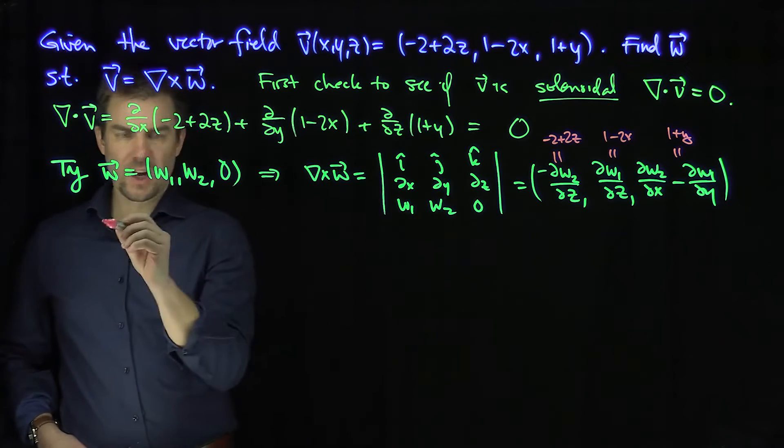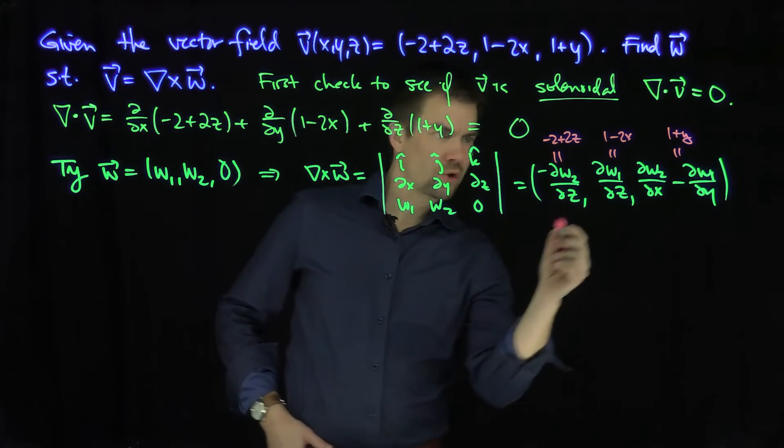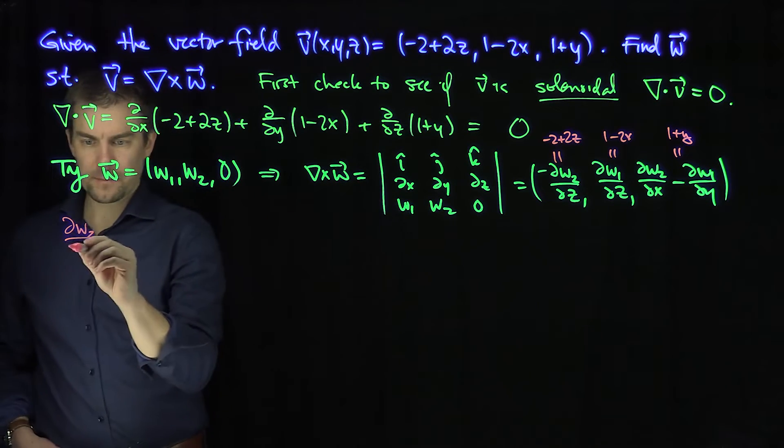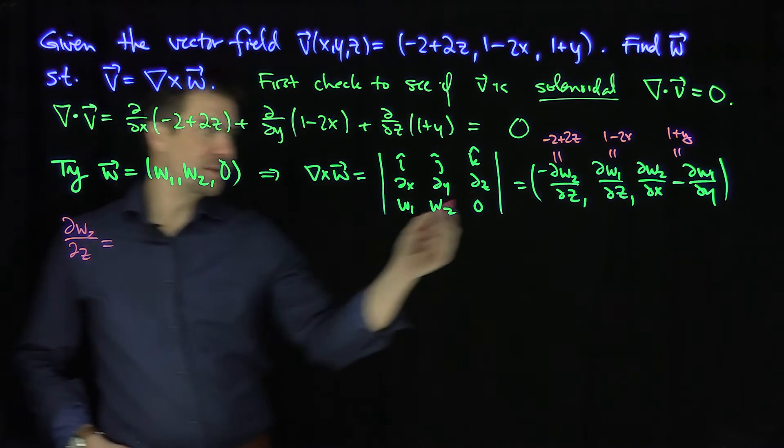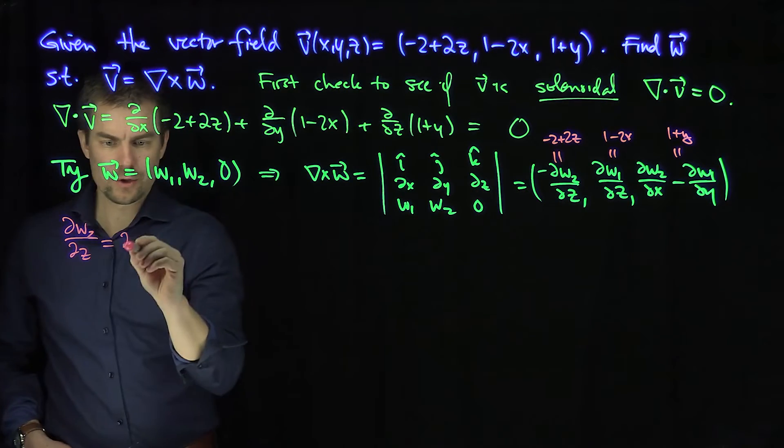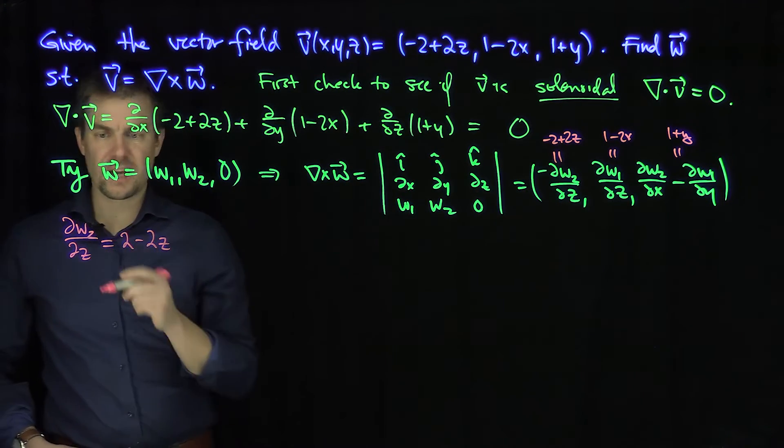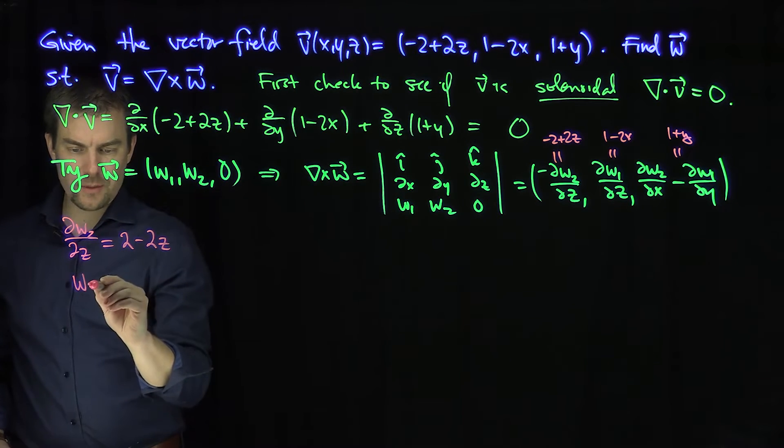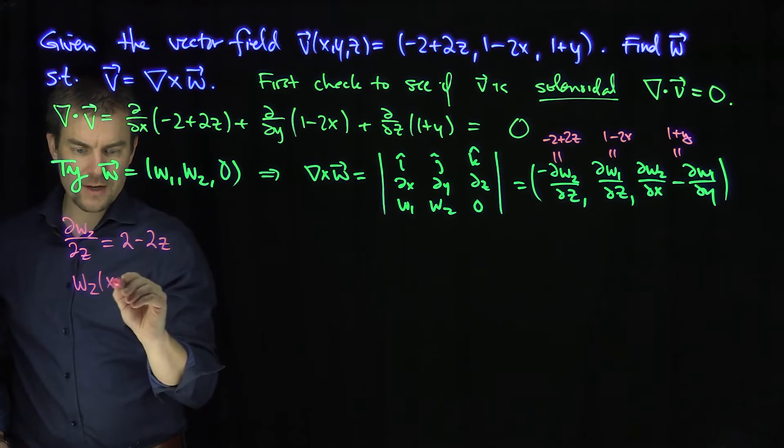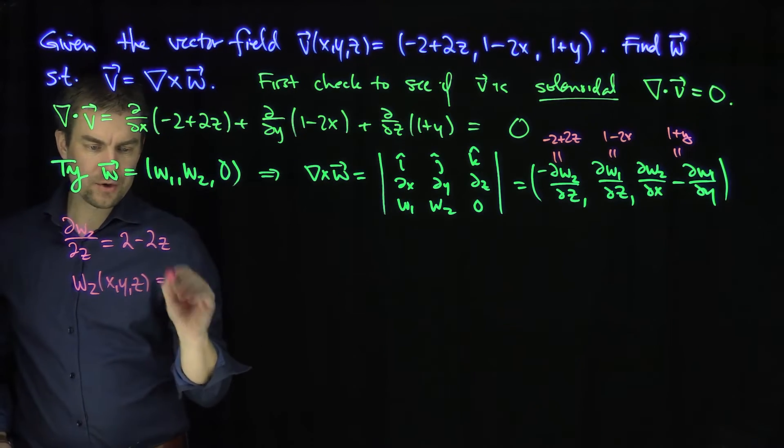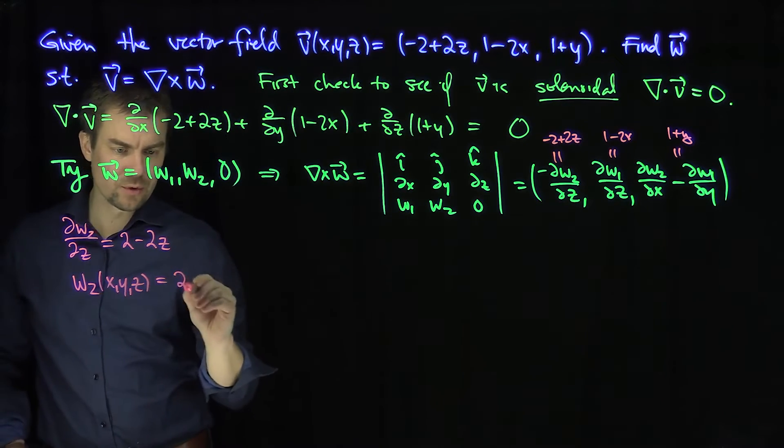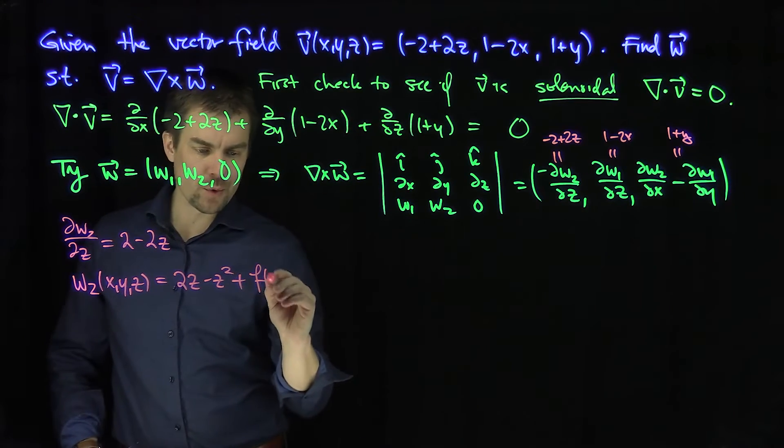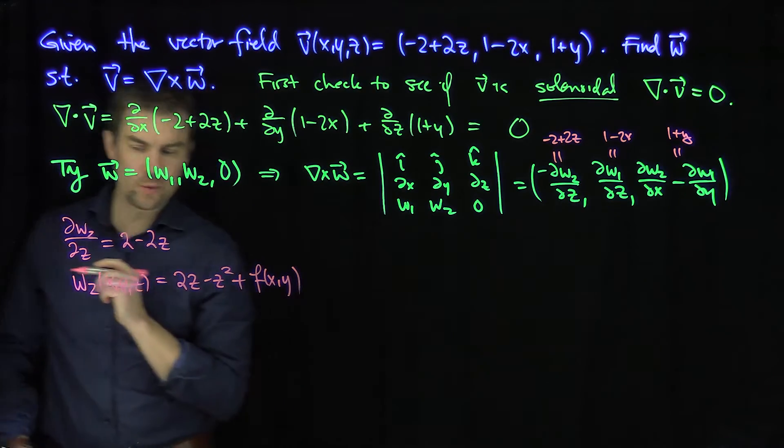So the first equation would tell me that partial w2 partial z would have to be 2 minus 2z. That's easy to construct such a w2. If I do a partial integral with respect to z, that would say that w2 of x, y, and z, doing a partial z integral will give me 2z minus z squared, plus a function that depends on x and y, which we don't know yet. So f of x, y is some function we don't know.